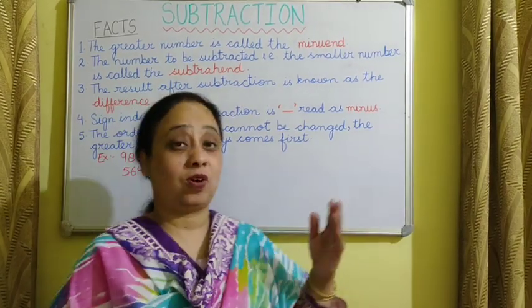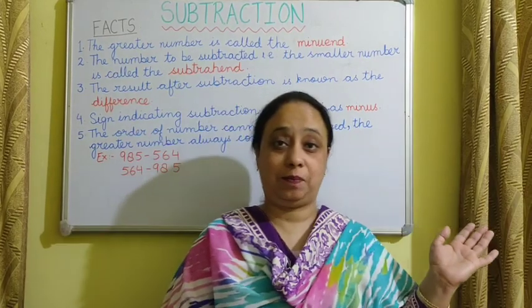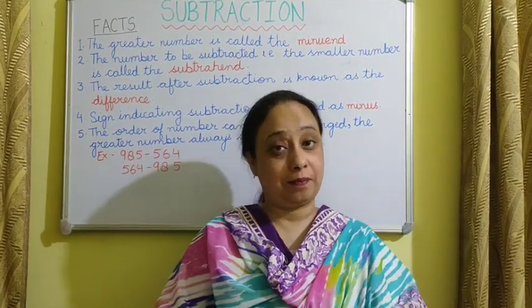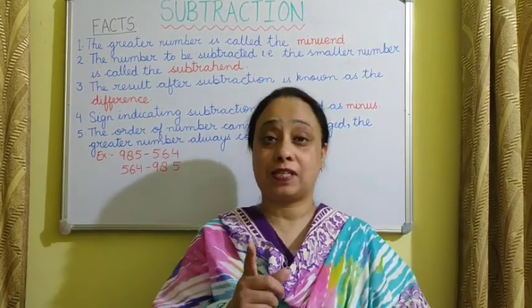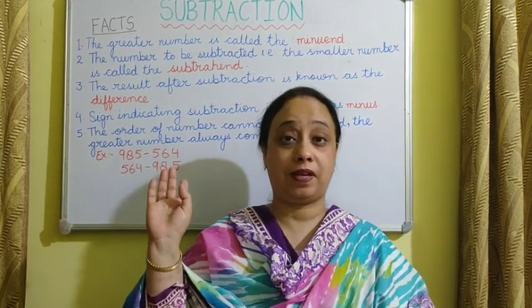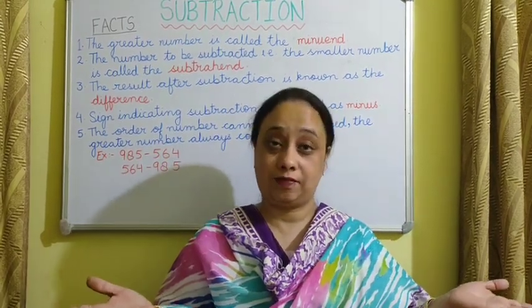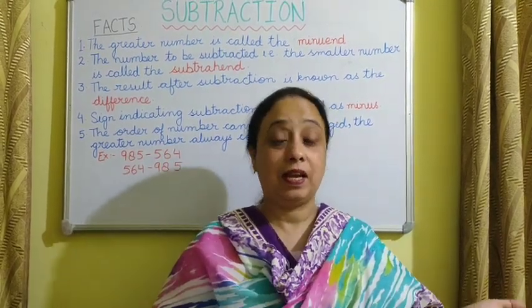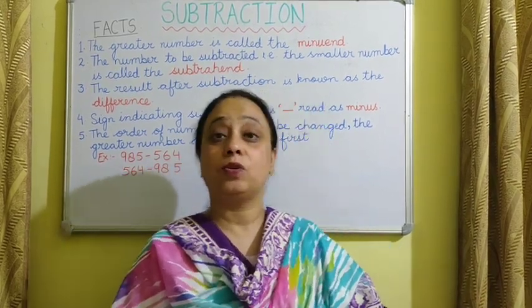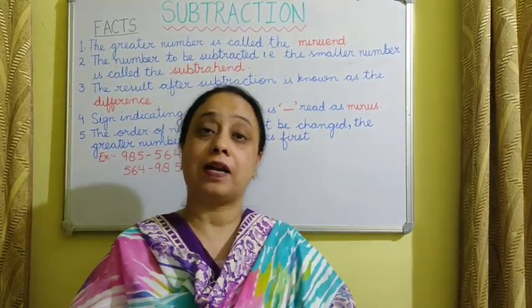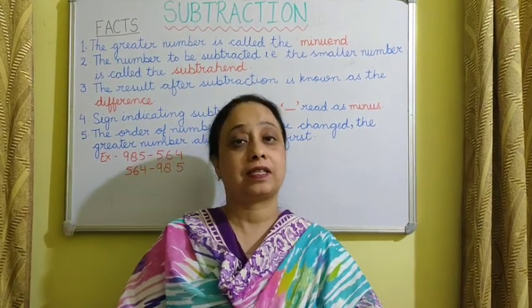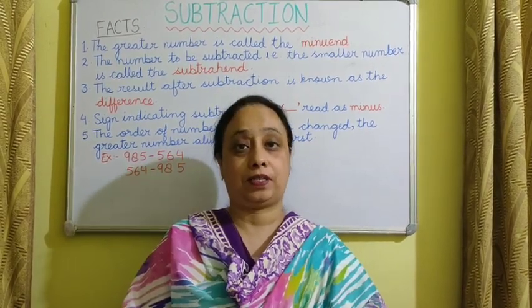Little Bo Peep has lost her sheep and does not know where to find them. If she started with three sheep and the three sheep ran away, how many sheep is she left with? We will find out through subtraction. But before starting subtraction, I am going to tell you some facts about subtraction.